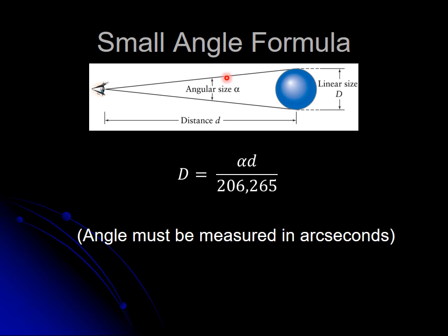We look at the Andromeda galaxy and measure the angle across it. If we can somehow find the distance - and we'll talk about that later in the semester - then you multiply the angular size times the distance, divide by 206,265, and now you know how big the galaxy is. This is the small angle formula, and this is how we're going to find sizes of astronomical objects.